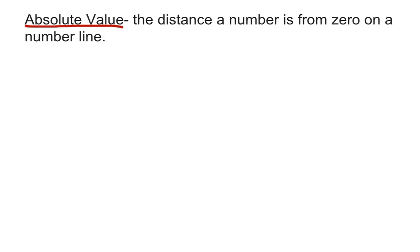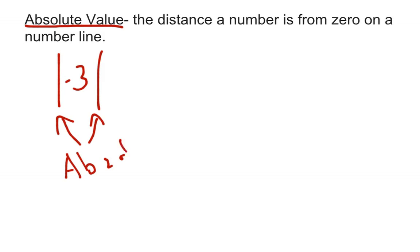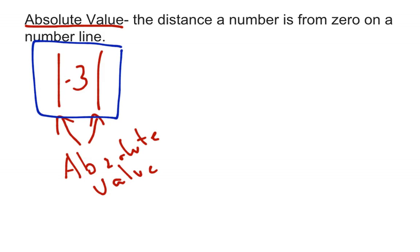Next concept: absolute value. Absolute value is the distance a number is from zero on a number line. There's a specific symbol for it - two straight vertical lines - and there will be a number or variable inside them. When you see that symbol, it's asking a question. For example, what is the absolute value of negative three? We never want to leave our answer with the absolute value symbols - we always want to resolve it.